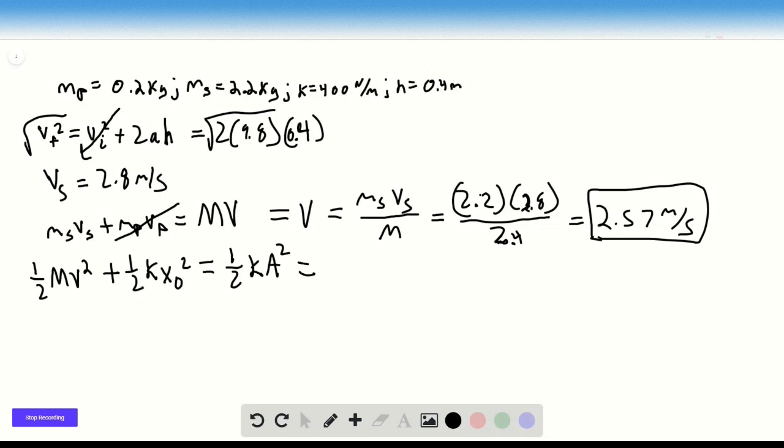So if we rearrange this for A, we get that A equals the square root MV squared. We could drop the one halves everywhere plus K X squared. I'm going to call this X naught because it's some initial extension over K.